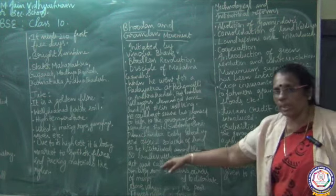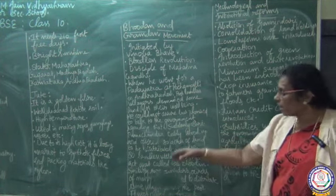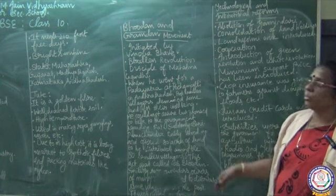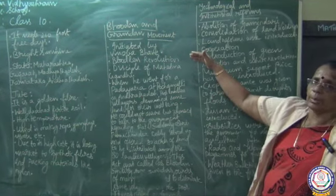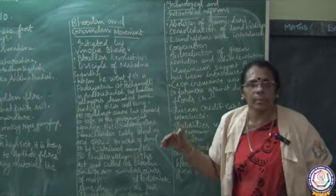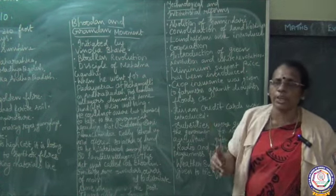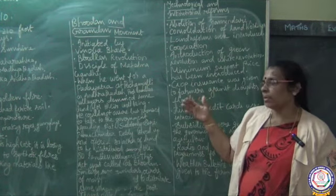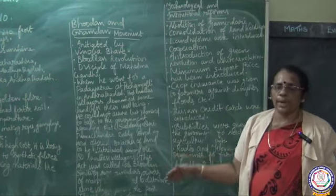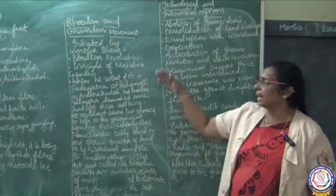Similarly, some zamindars who were owners of many villages donated entire villages to the poor people. This is called Gramdan. Together, this Bhoodan and Gramdan movement — initiated by Vinoba Bhave — was called the bloodless revolution.